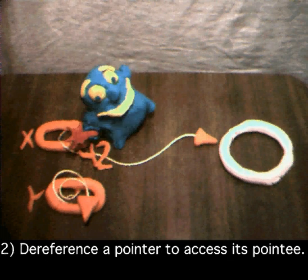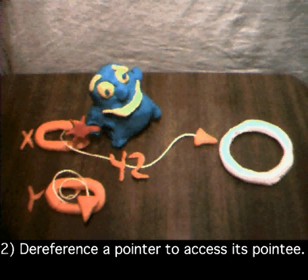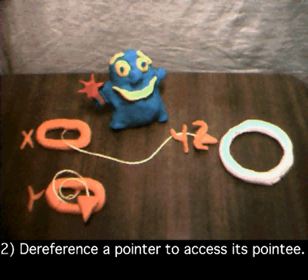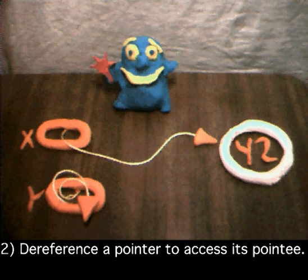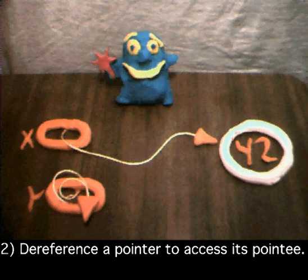Number two, pointer dereferencing starts at the pointer and follows its arrow over to access its pointee. As we all know, this only works if there is a pointee, which kinda gets back to rule number one.